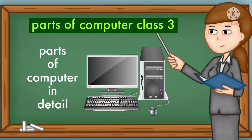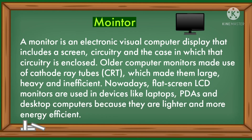Today we will learn about parts of a computer in detail. First, we will learn about the monitor. A monitor is an electronic visual computer display that includes a screen, circuitry, and the case in which that circuitry is enclosed. Older computer monitors made use of cathode ray tube or CRT, which made them large, heavy, and inefficient. Nowadays, flat screen LCD monitors are used in devices like laptops, PDAs, and desktop computers because they are lighter and more energy efficient.